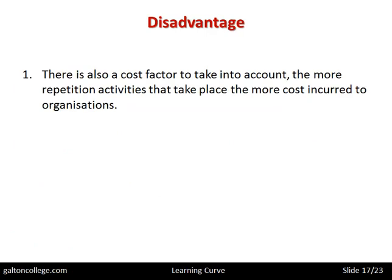The disadvantages: there's a cost factor to take into account. The more repetition activities that take place, the more cost is incurred to the organization. Repetition means breaking the task up into many single tasks, but then there's the movement along the line, the organization of the different tasks, the stock required, and the logistics — the movement along the line and having all of the components available throughout. And if there's a breakdown in the line...